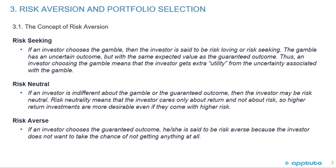Risk Averse – If an investor chooses the guaranteed outcome, he or she is said to be risk averse because the investor does not want to take the chance of not getting anything at all.